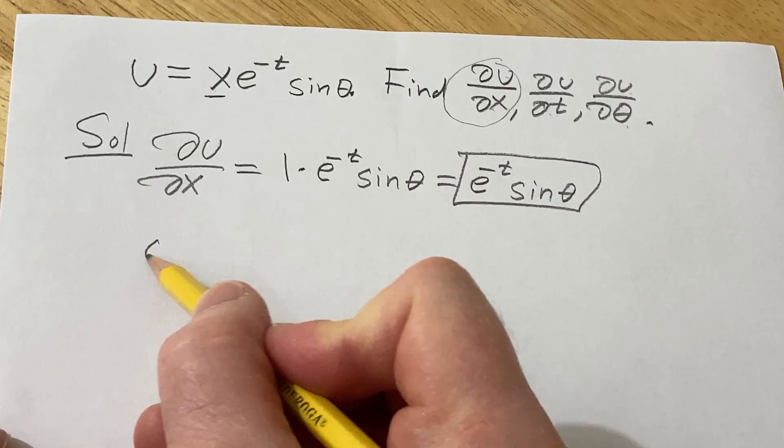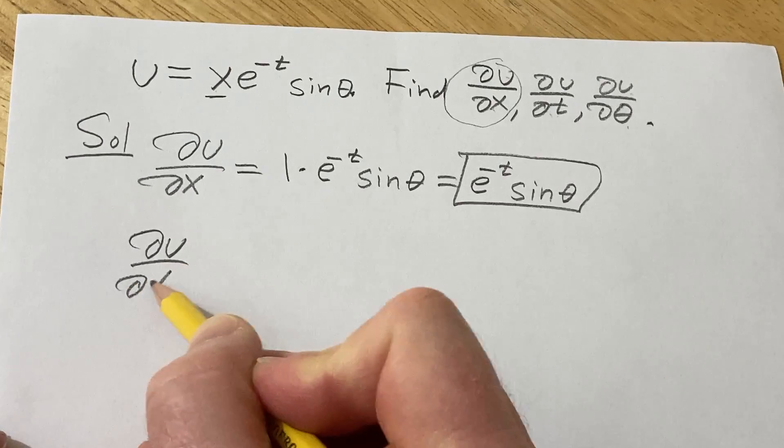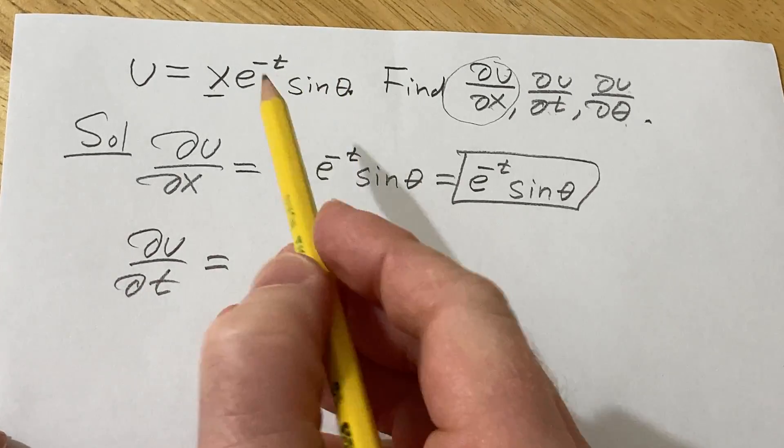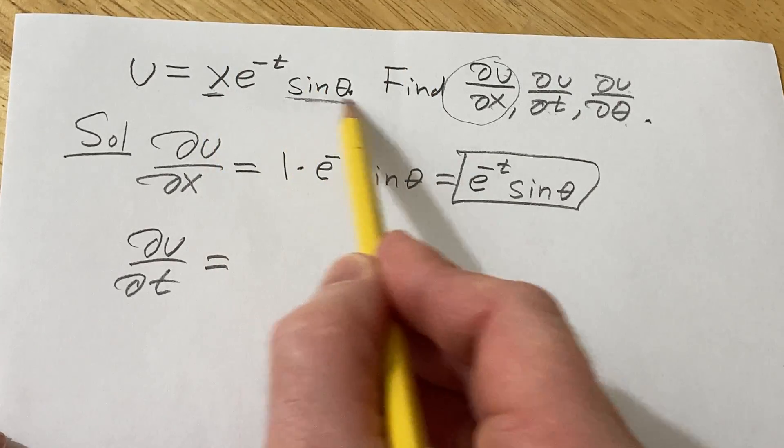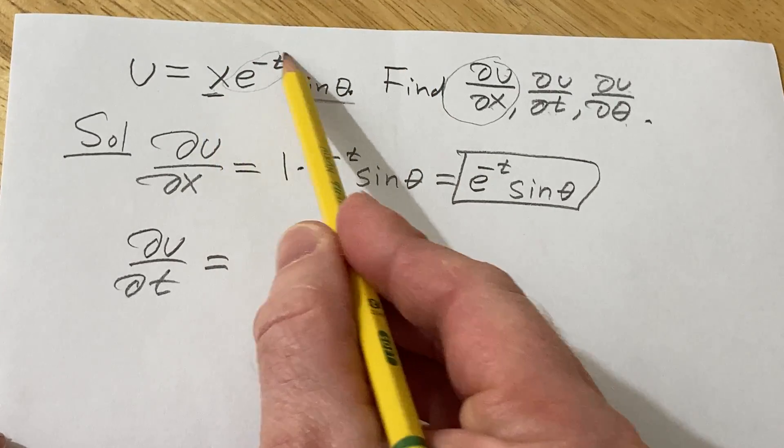Let's find ∂u/∂t. When looking for ∂u/∂t, we treat all of the other variables as constants. So this is a constant and this is a constant, so we're just basically differentiating this.